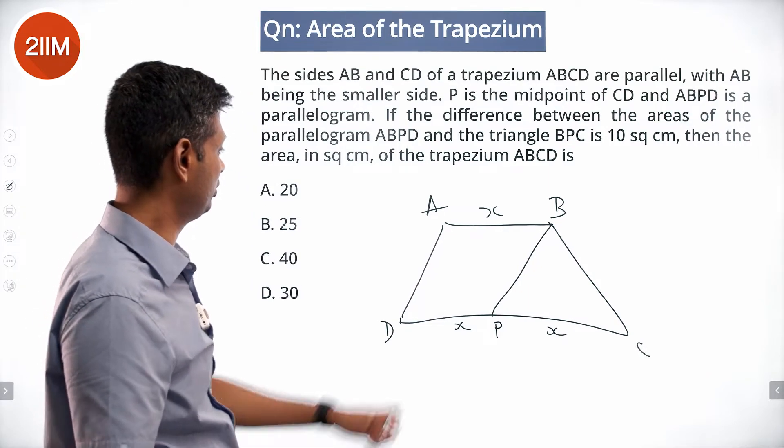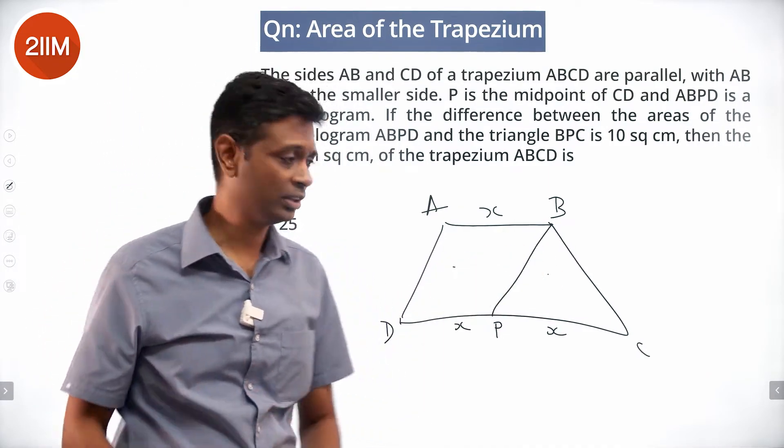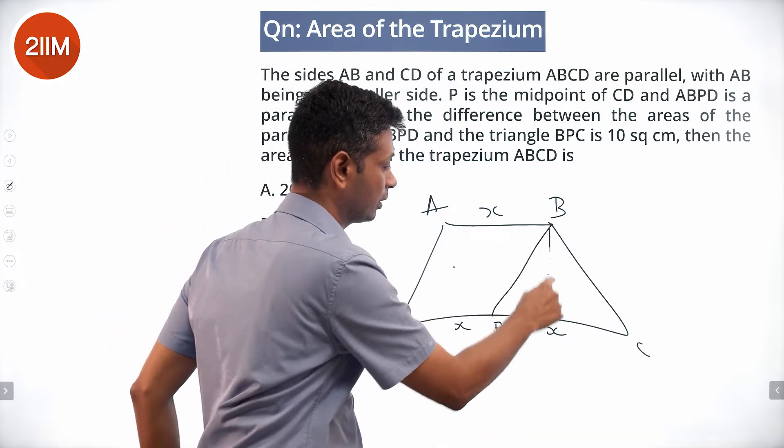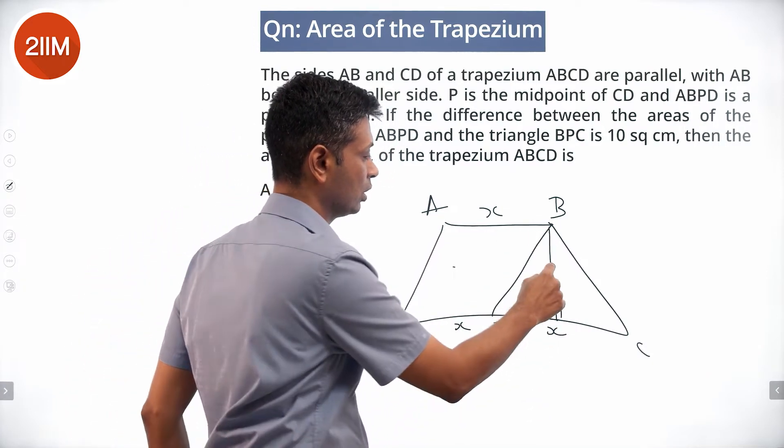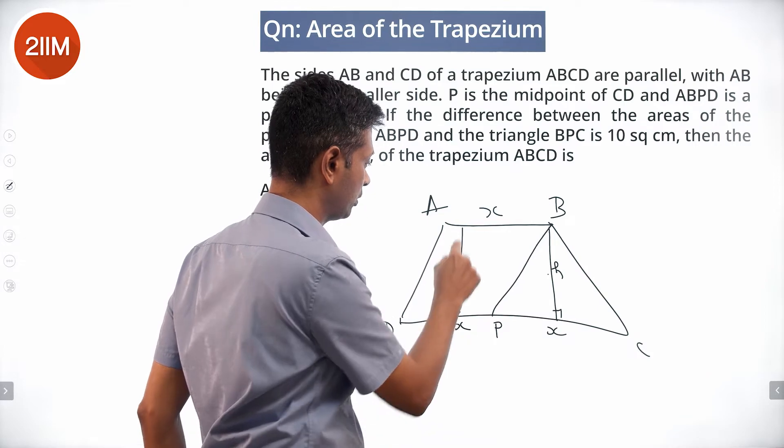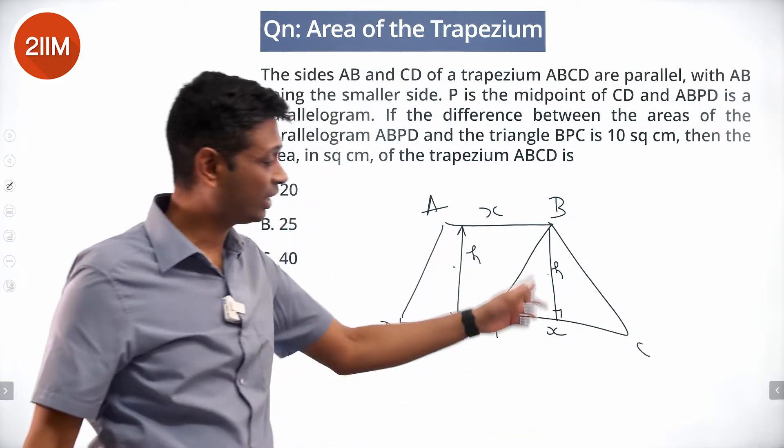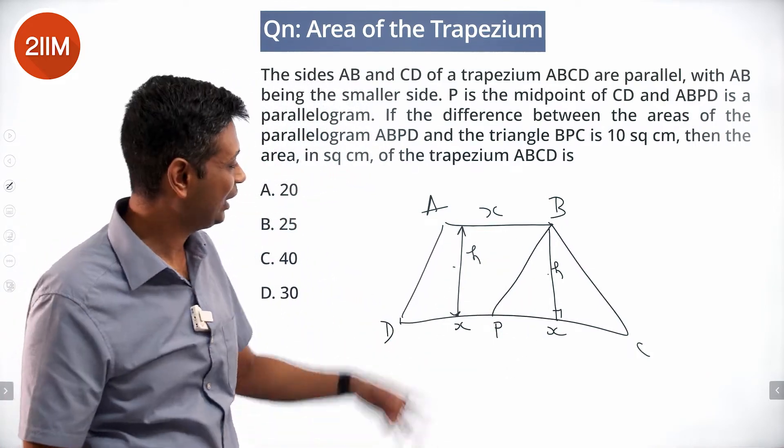To start, this area minus this area equals 10. Let H be the height. The area of the triangle is half times base times height. The area of a parallelogram is base times height.